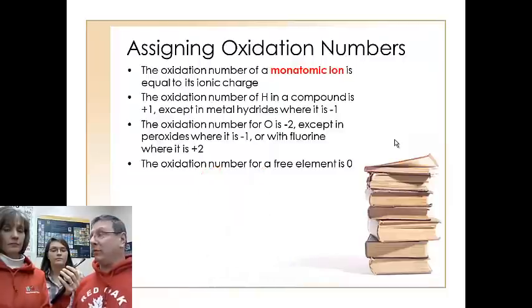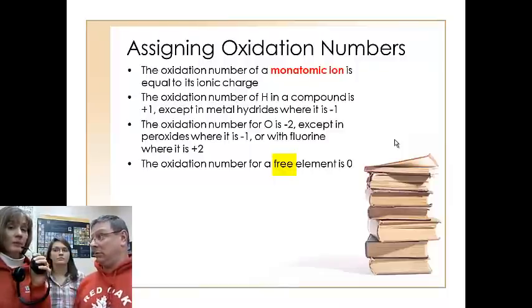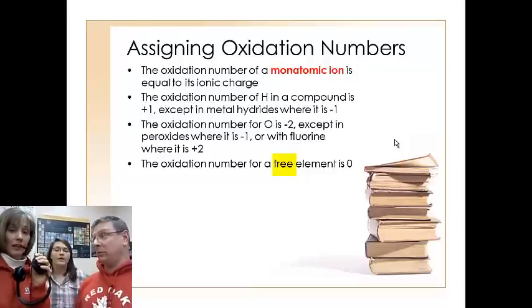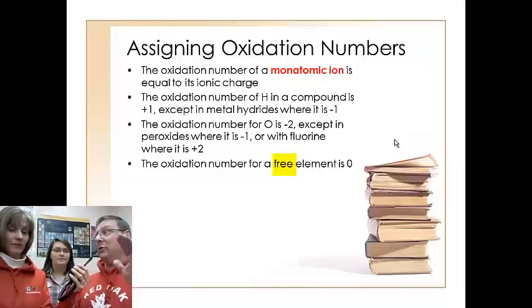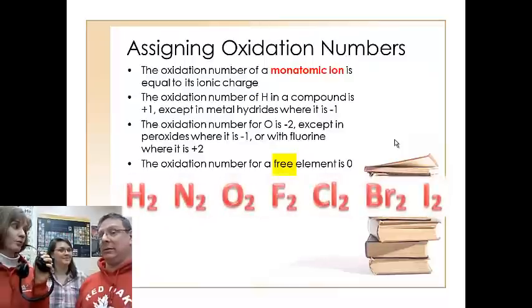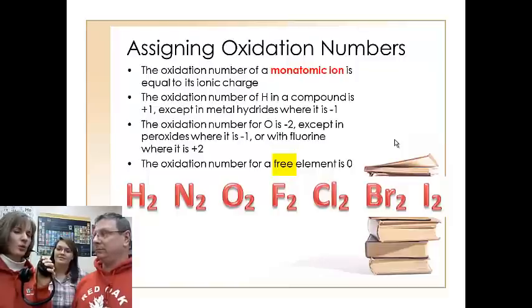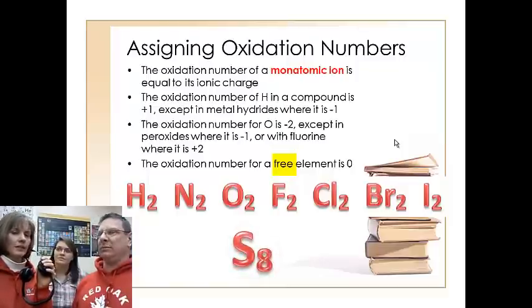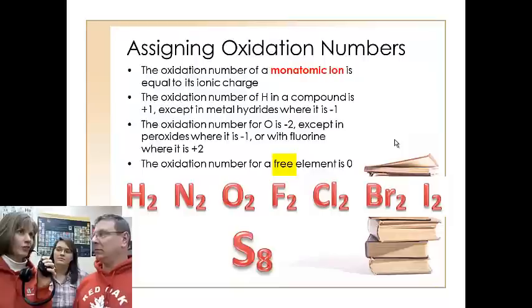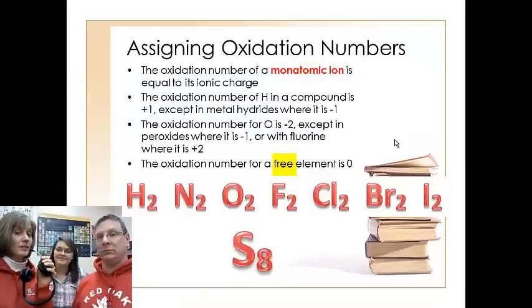The oxidation number for any free element, an element, is zero. It's neutral. Right. So that's an element by itself, not bonded to anything. Yes. Not bonded to any other elements. Right. Because we know about our friend Claire Brewster and those magic seven, the diatomic elements. And then there's some other weird things like sulfur that can form S8 and phosphorus that can form a multi-atom. But they're all phosphoruses. So if it's just that element, the oxidation number is going to be zero.